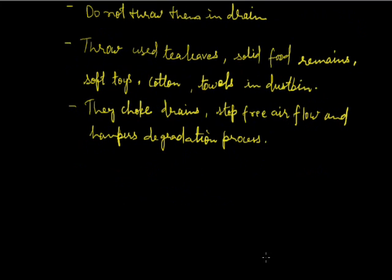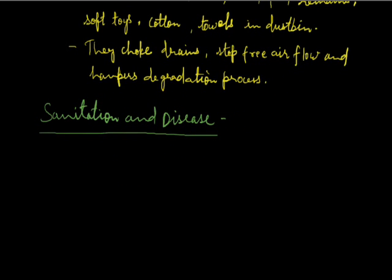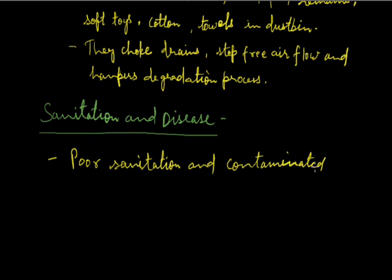Sanitation and disease. Poor sanitation and contaminated drinking water is a cause of large number of diseases. A very large fraction of our population defecates in the open on dry river beds, on railway tracks, near fields and many times directly in water. Untreated human excreta is a health hazard. It may cause water pollution and soil pollution. Both the surface water and ground water get polluted.